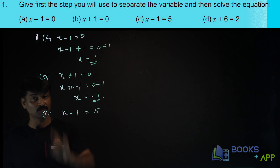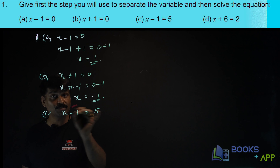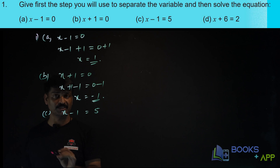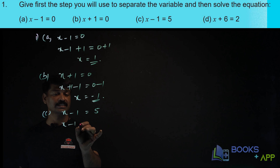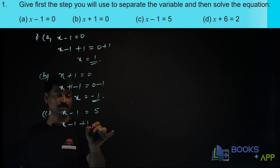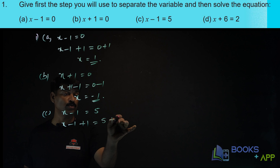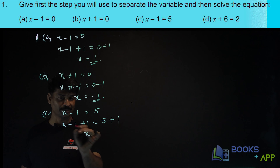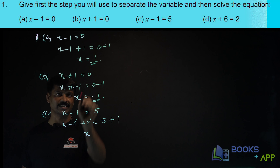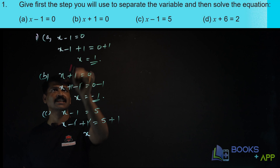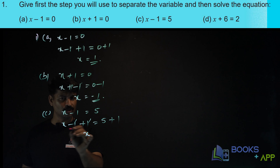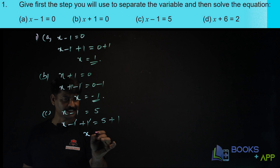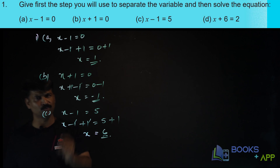What is the first step you will do? We have to remove this minus 1 from this side. So just add plus 1 here, and here also you have to add plus 1. Minus 1 and plus 1 get cancelled. So what is remaining? x. x is equal to 5 plus 1, that is 6. I think it is very simple.